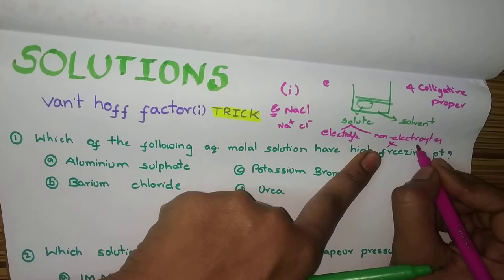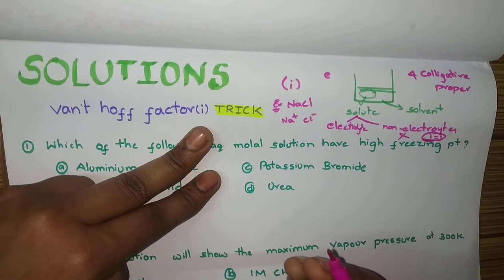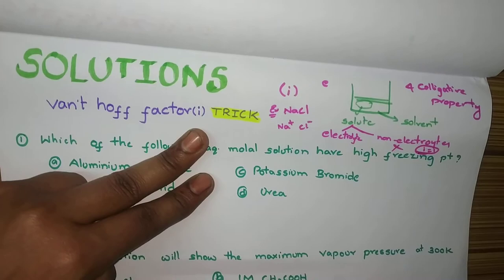Van't Hoff factor is denoted by i. But, for this electrolyte, there is Van't Hoff factor. You need to calculate that Van't Hoff factor to get these colligative properties. So, let me discuss the trick here.